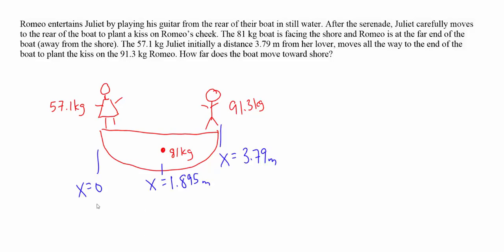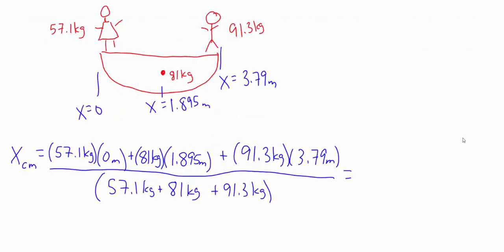We're told the boat is 3.79 meters long. So Juliet's position is x equals zero, Romeo is on the other end at x equals 3.79 meters, and because the boat is symmetric, its center of mass is at the center of the boat — half of 3.79, which is 1.895 meters. To calculate the center of mass, it's M1·x1 plus M2·x2 plus M3·x3, all divided by the total mass.